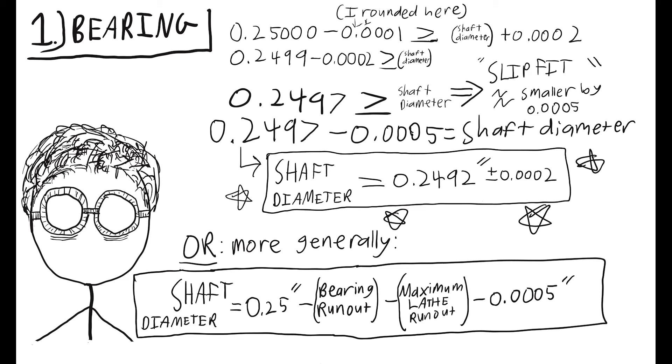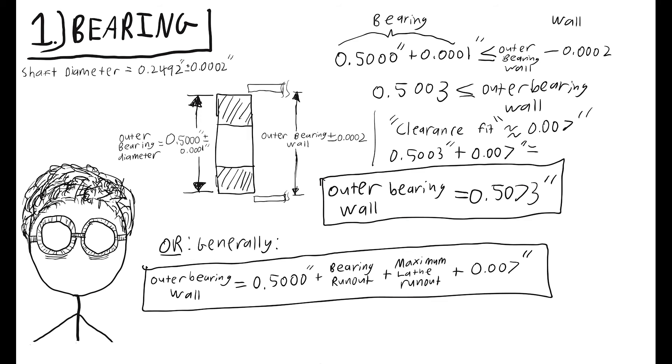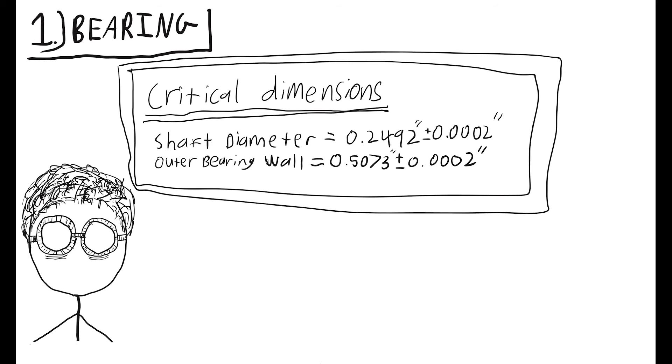And arrive at the final answer for what we will say our shaft diameter is, which is 0.2492 plus or minus 0.0002 inches. Using the exact same methodology as we just did, except now keeping in mind that the outer bearing diameter has to be smaller than the outer bearing wall, whose only job is to keep the string in place, meaning it should have enough clearance to allow the bearing to spin freely of the body. There we have it. Just like that, using neither hand-waving nor magic, we have arrived at the proper critical dimensions for our bearing seat.